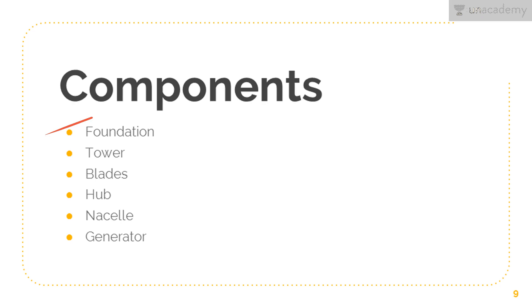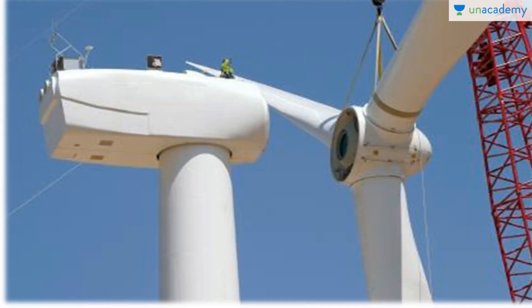There is a hub where the wind is transferred and a nacelle, which is used for transferring the wind from the hub to the generator. Then there's a generator where the electricity is generated. You can see the turbine blades over here, and this is where the hub is. This is the tower. Inside the hub, you can find the nacelle as well as the generator.